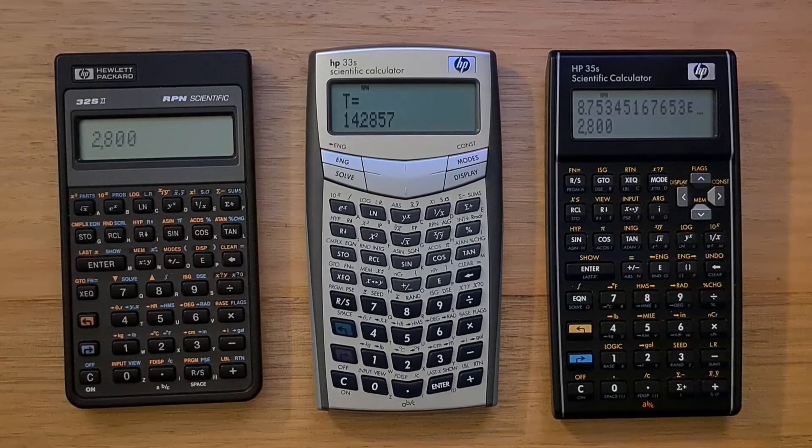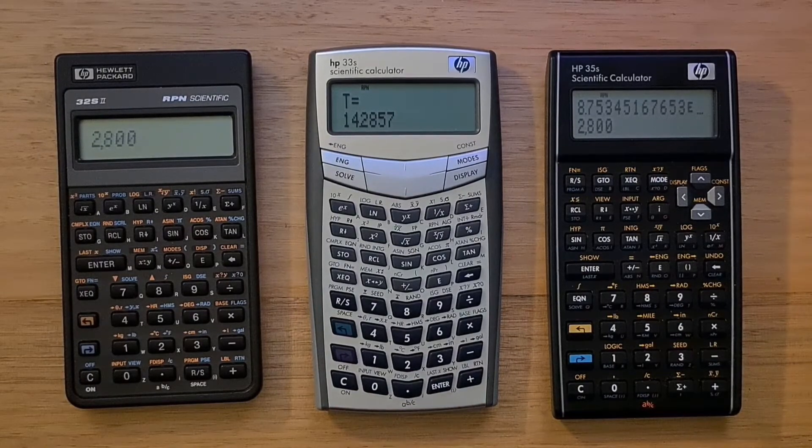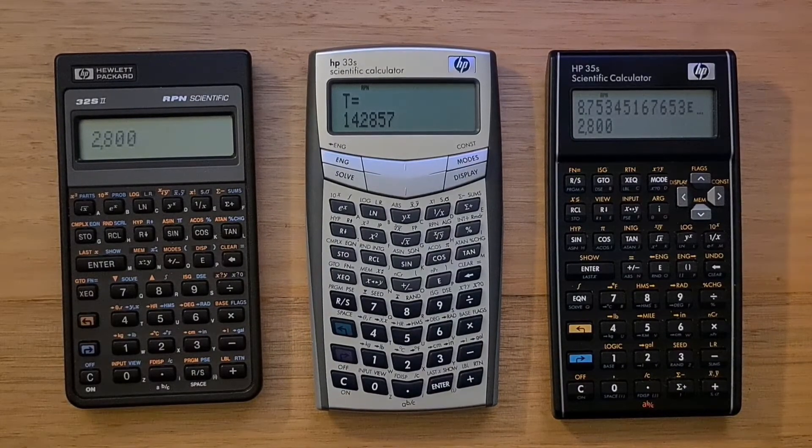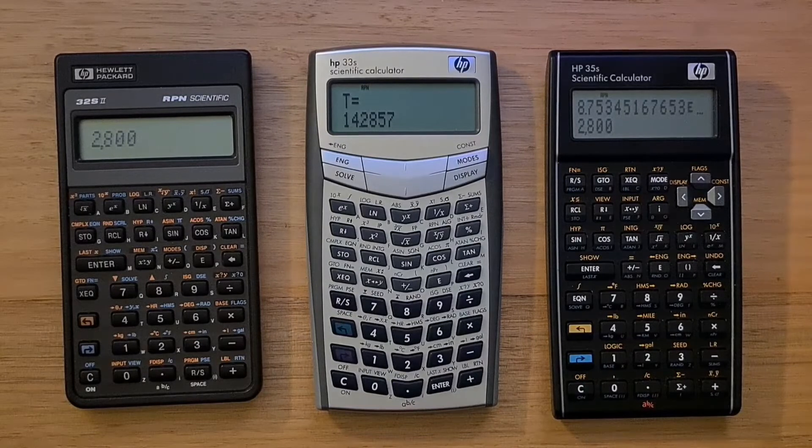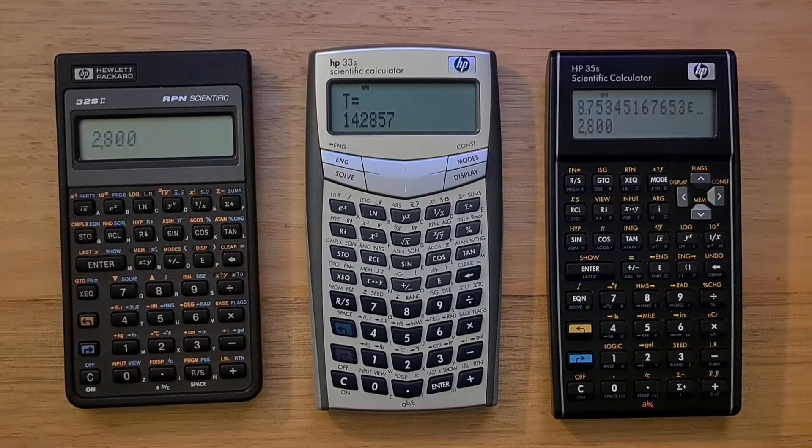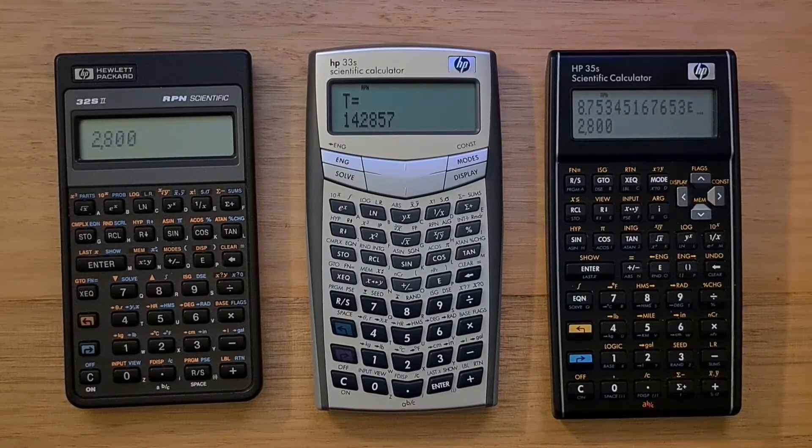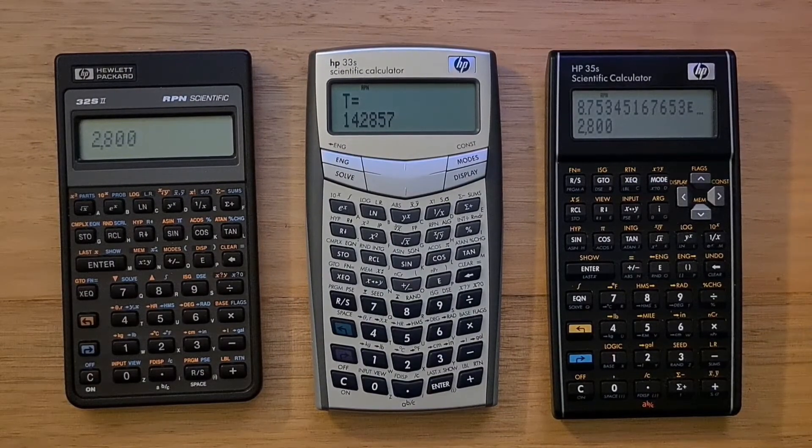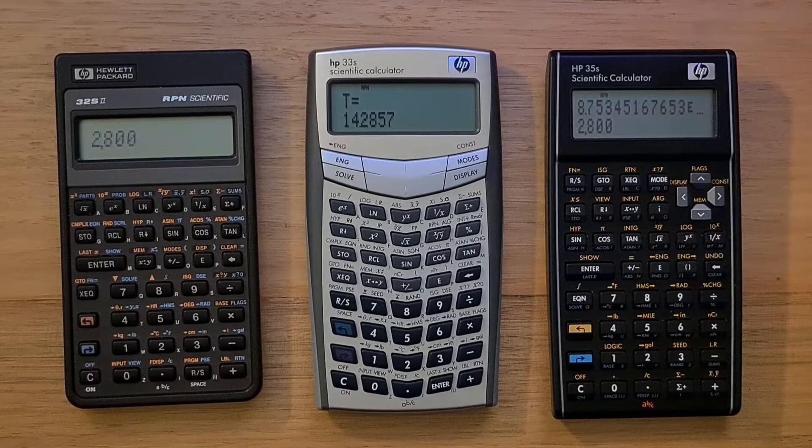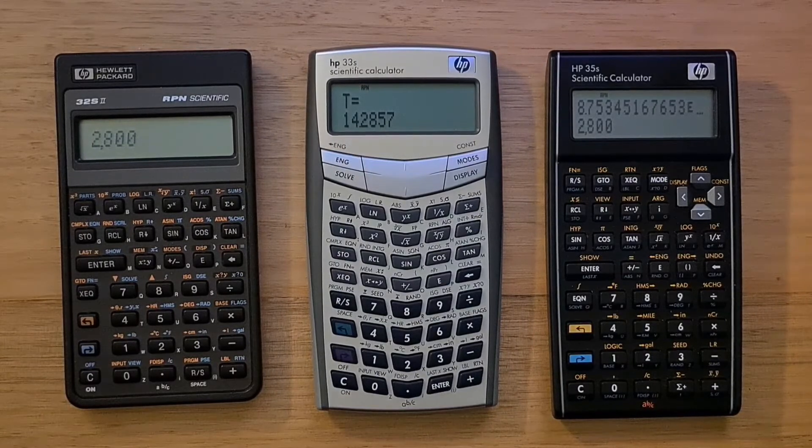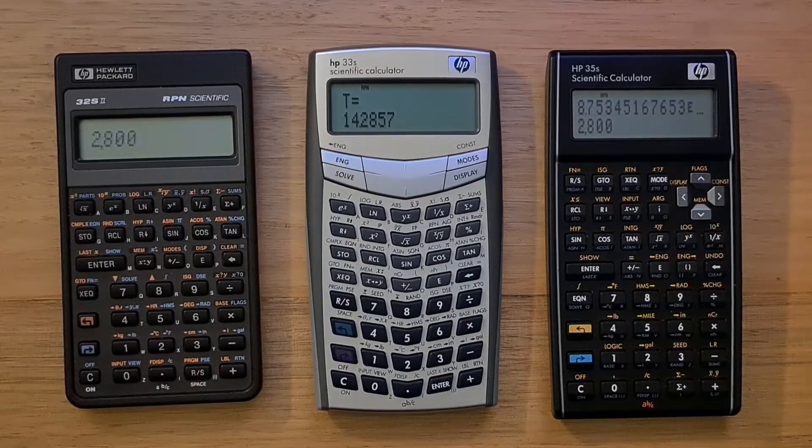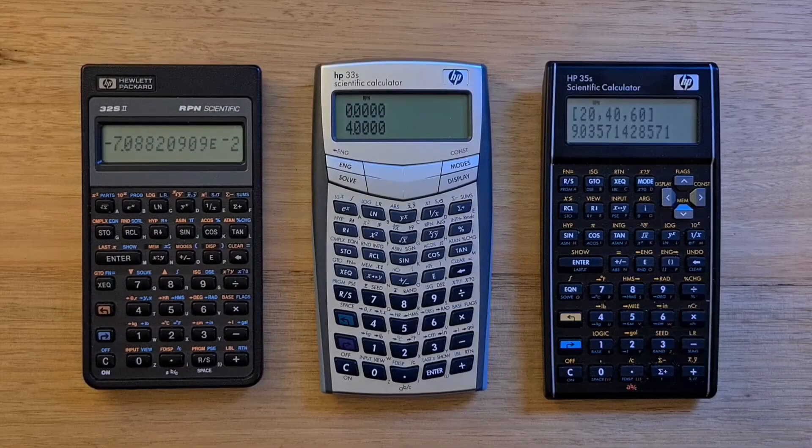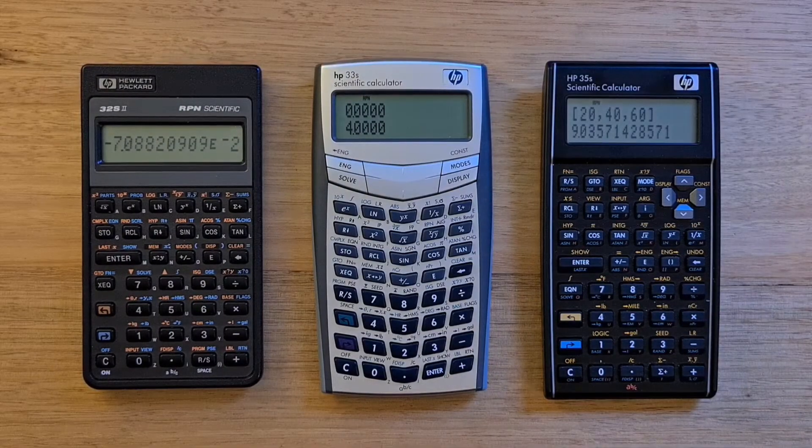You can also do a numeric integration of an equation over a range of values. But you'll notice that on the 33S, the decimal point is quite small and can be hard to see. The 33S also did limit the length of equations to 255 characters. But there's no arbitrary limit on the 32S2 or 35S.